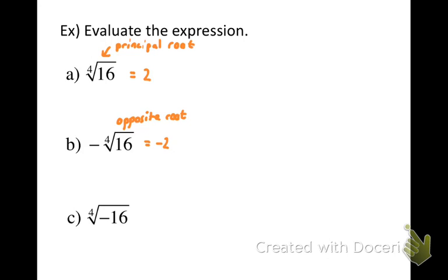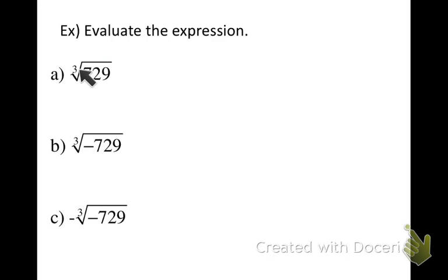The fourth root of a negative number has no real root, because n is even. For odd-index radical expressions: the cube root of positive 729 is positive 9, since 9 to the third power gives 729. The cube root of negative 729 is negative 9, since negative 9 to the third power gives negative 729. The opposite cube root of negative 729 is positive 9 — the opposite of negative 9. Don't give plus or minus when things are written in radical notation unless specifically asked to find both roots.